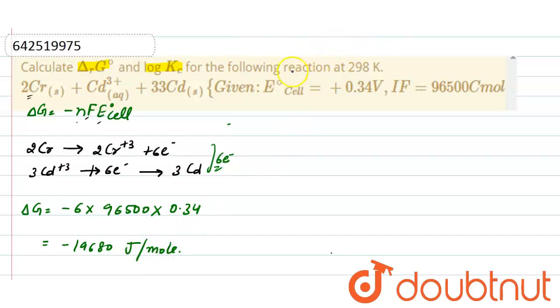Now moving on, we have to find the value of log Kc. As we know, delta G equals minus 2.303 RT log Kc. We know the value of delta G and RT, so we have to find the value of log Kc.